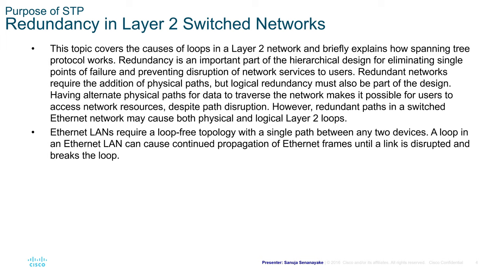Redundant networks require the addition of physical parts like network links, but logical redundancy must also be part of the design. Having alternate physical paths for data to traverse the network makes it possible for users to access network resources despite path disruption. However, redundant paths in a switched Ethernet network may cause both physical and logical Layer 2 loops. Ethernet LANs require a loop-free topology with a single path between any two devices, and a loop can cause continued propagation of Ethernet frames until the link is disrupted and breaks the loop.